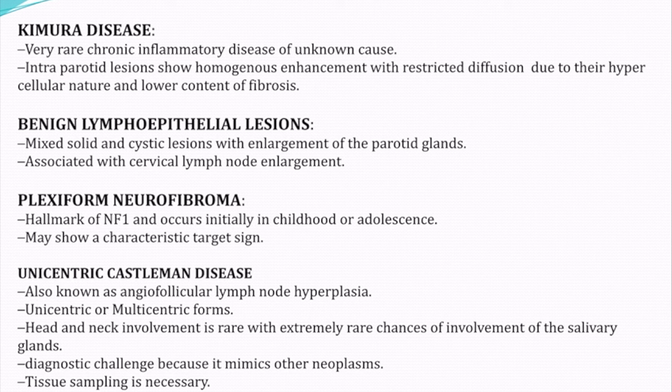Kimura disease is a very rare chronic inflammatory disease; intraparotid lesions show homogenous enhancement with restricted diffusion due to their hypercellular nature and lower fibrosis content. Benign lymphoepithelial lesion is a mixed solid-cystic lesion with parotid enlargement associated with cervical lymph node enlargement. Plexiform neurofibroma is the hallmark of NF1 and may show the characteristic target sign. Unicentric Castleman disease, also known as angiofollicular lymph node hyperplasia, can be unicentric or multicentric; head and neck involvement is rare, and salivary gland involvement is extremely rare, posing a diagnostic challenge as it mimics other neoplasms — tissue sampling is necessary.